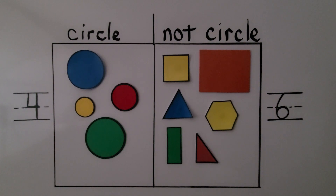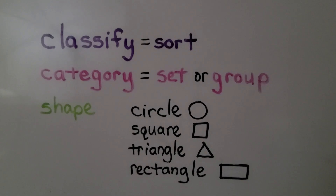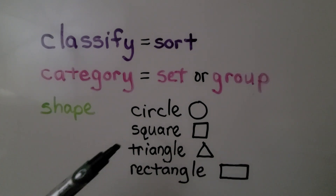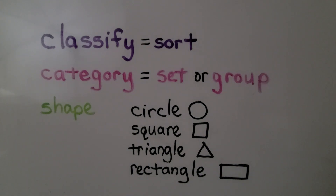Their colors were not important. What was important was their shape, because we're sorting and classifying them by shape. When we classify, we sort. A category is a set or group. Shapes we've covered: circle, square, triangle, and rectangle. Our next lesson, 12.3, we're going to classify and count by size. I hope you'll join me. I hope you have a really nice day, and I hope you hit the like button. Bye!